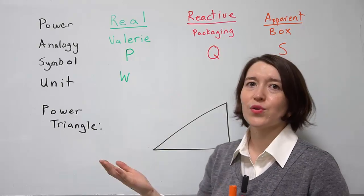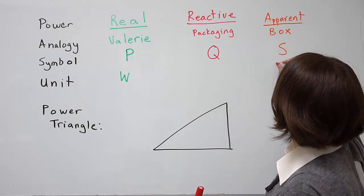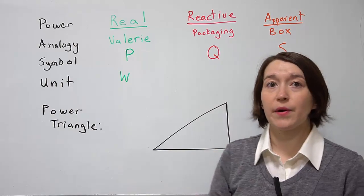Apparent power is the voltage times current, so we actually call it volt amps, VA. That's the unit for apparent power.